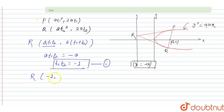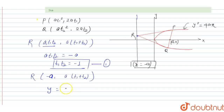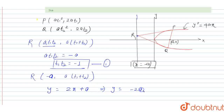The coordinate of R is (-a, a(t1+t2)). It is also given that point R passes through the line y = 2x + a. Substituting x = -a into the equation gives y = -2a + a = -a.